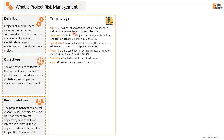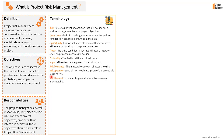Any identified risk in the project should have a probability and an impact. Risk tolerance is the measurable amount of acceptable risk, usually set by the organization for the project manager. Risk appetite is a more high-level, general description of the acceptable range of risk. The risk threshold is the specific point at which risk becomes unacceptable. These three terms — risk tolerance, risk appetite, and risk threshold — are set by the organization. The most specific is the risk threshold; for example, the organization cannot accept any risk with an impact of more than $50,000 US dollars loss.